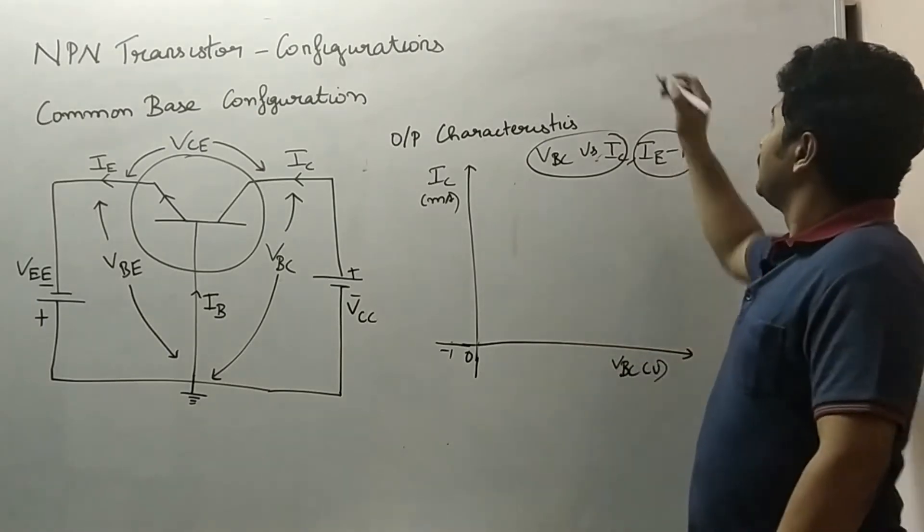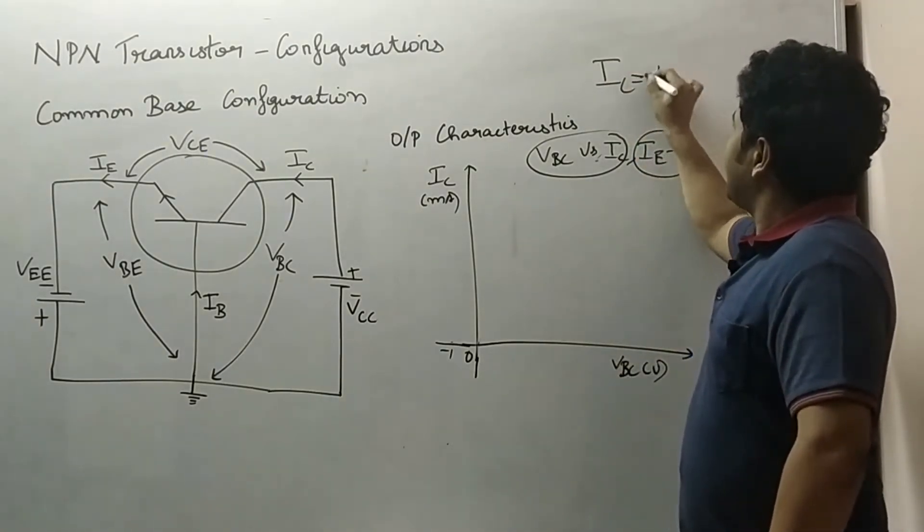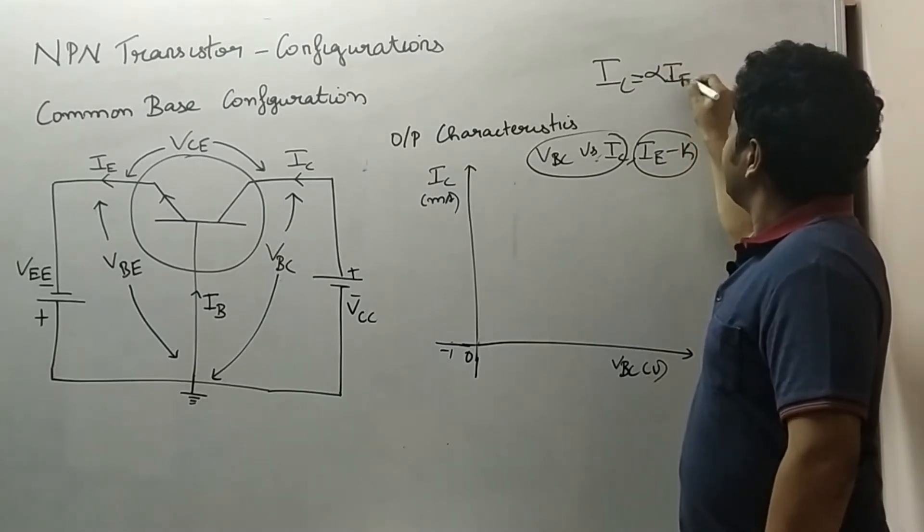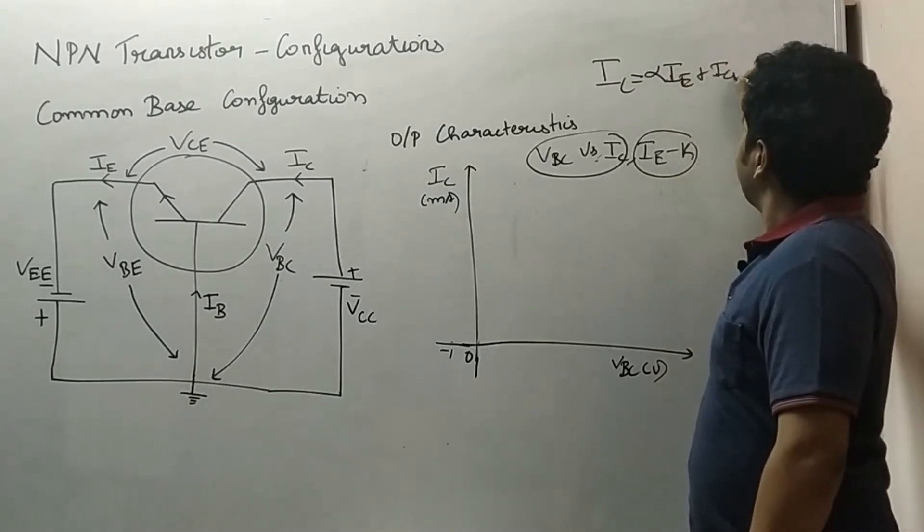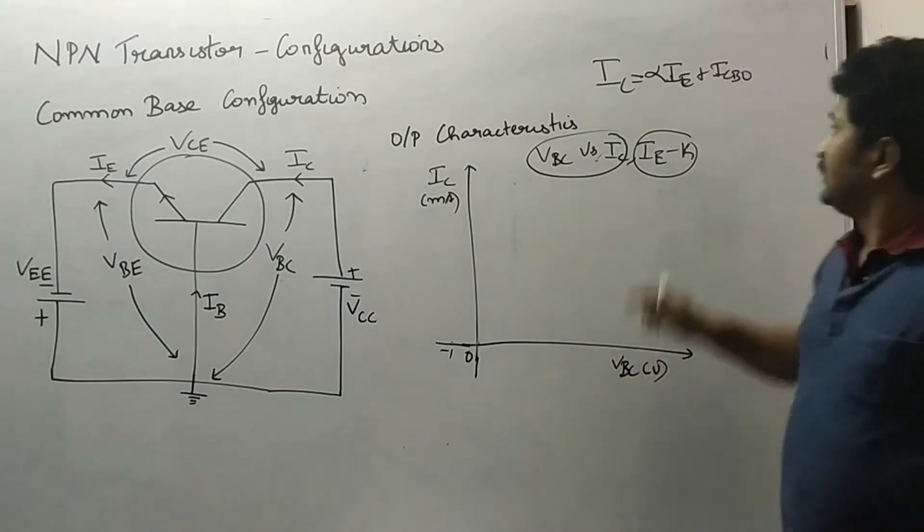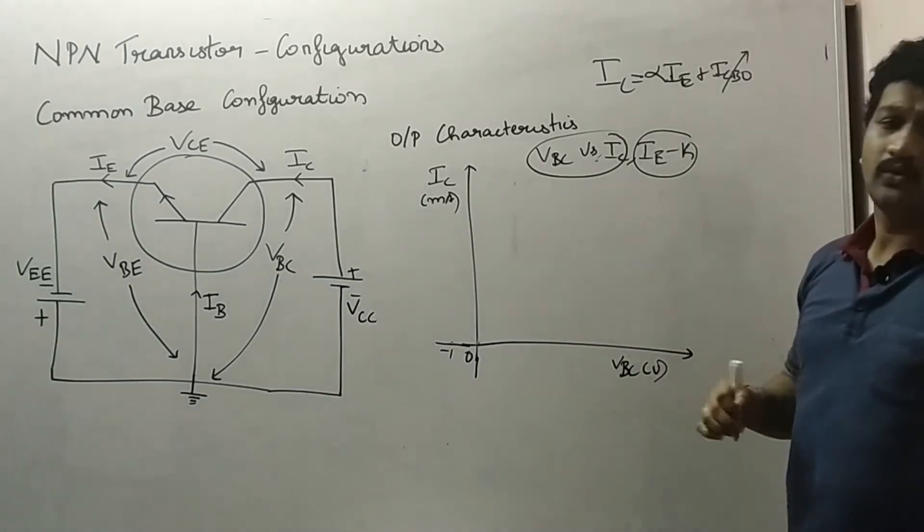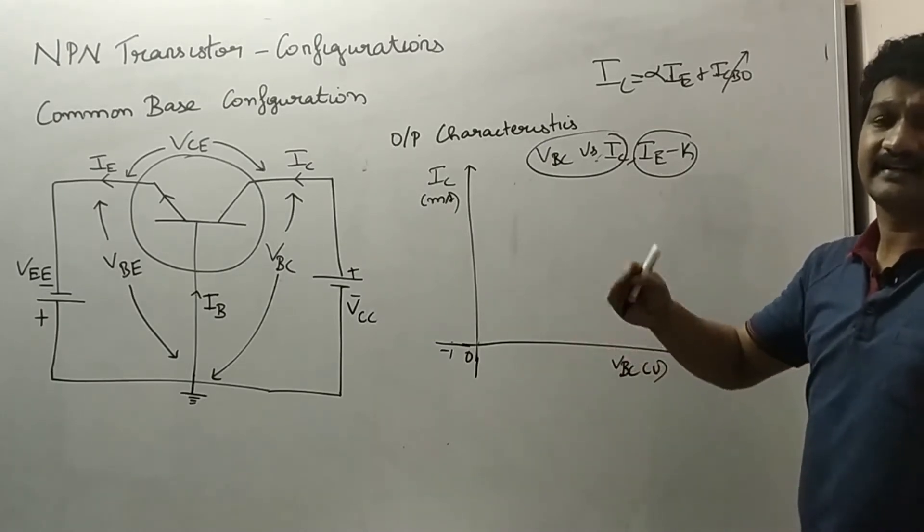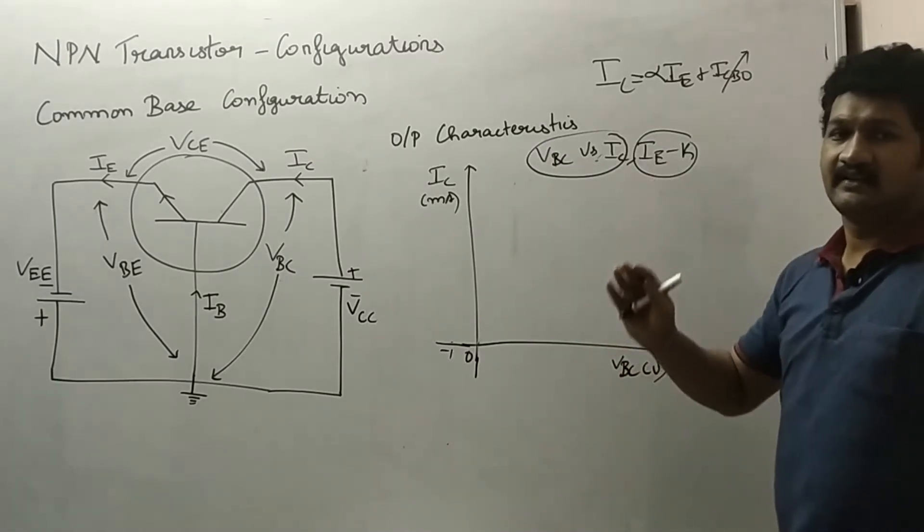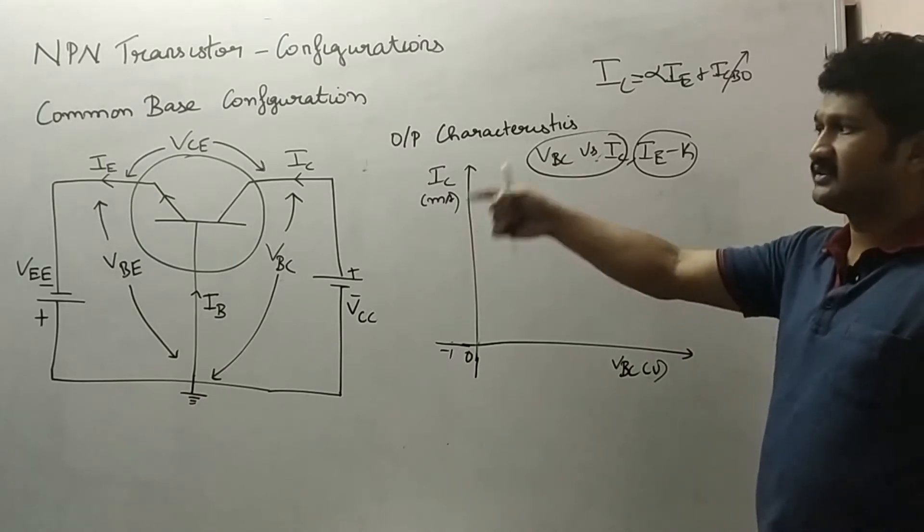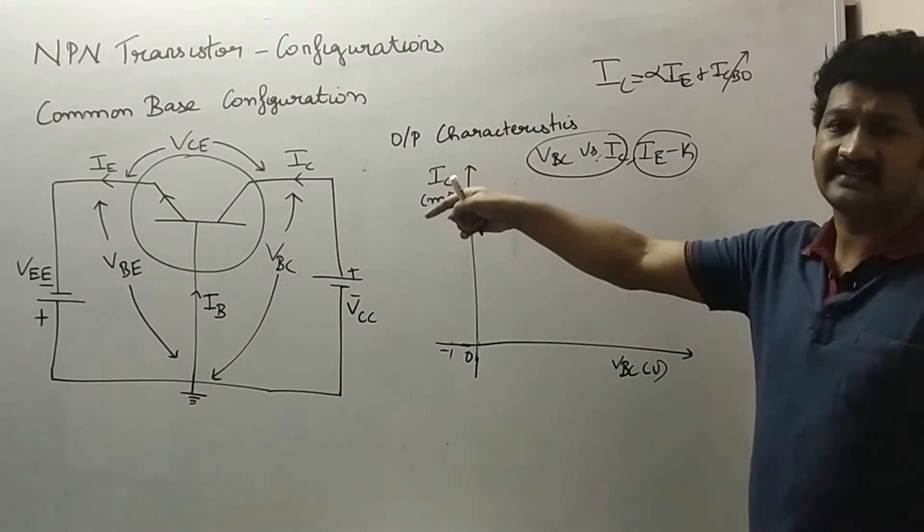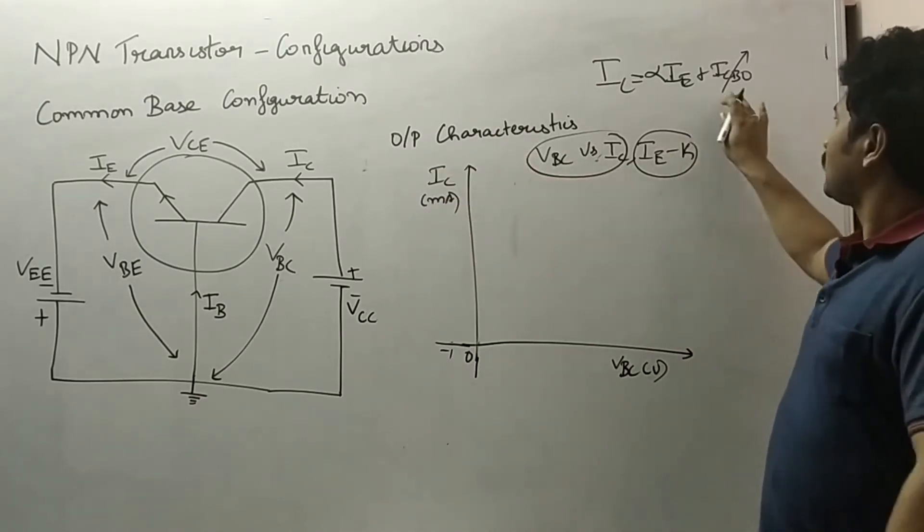Before going to the concept, we have to recall this equation: IC equal to alpha IE plus ICBO. This ICBO is the reverse saturation current. As already told, there will be reverse saturation current if the temperature of the device increases. In the previous video, when I was discussing the CE configuration working, I talked about this reverse saturation current.